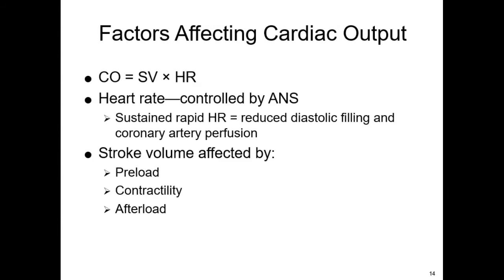Cardiac output is controlled in part by the autonomic nervous system. Heart rate can increase in times when we need more perfusion, and the parasympathetic system tends to relax the heart rate. Other factors that affect stroke volume include preload — the amount of blood available to be pumped — contractility, which is how hard the heart can pump, and afterload, also known as systemic vascular resistance, the force the heart must overcome in order to pump blood to the rest of the body.